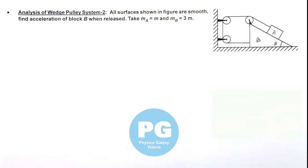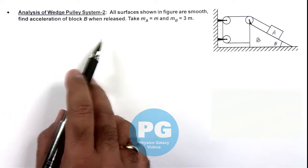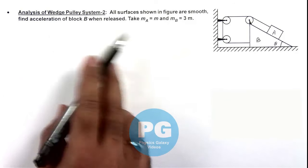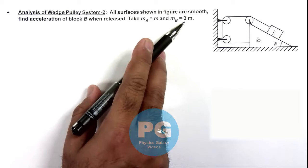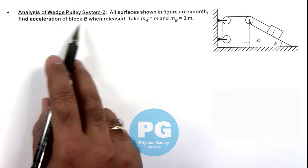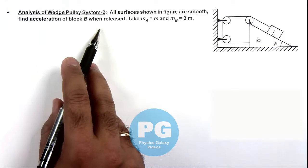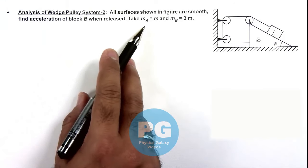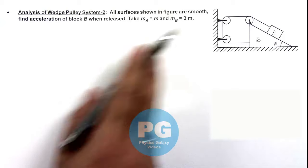This is another illustration for analysis of a wedge-pulley system. We are given that all the surfaces shown in the figure are smooth, and we are required to find the acceleration of block B when it is released. We are also given that the mass of block A is m and that of B is 3m.